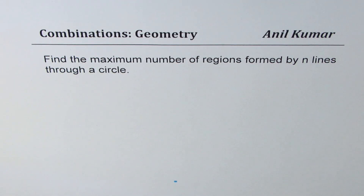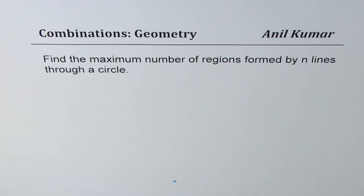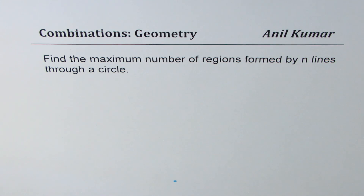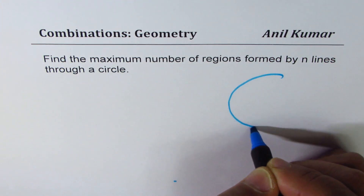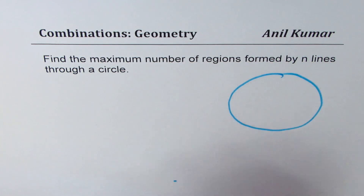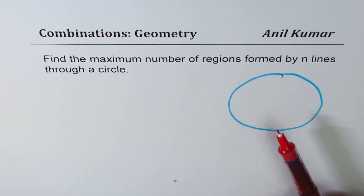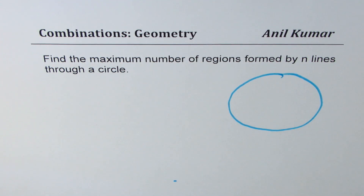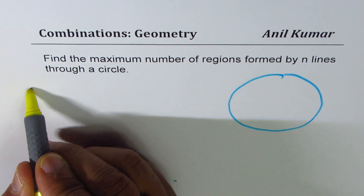I'm Anil Kumar and in this video we will see how to find the number of regions created by n lines. The question is: find the maximum number of regions formed by n lines through a circle. Let's consider a circle — if we draw a few lines in the circle, how many regions can we get? To do this, let's make a table.